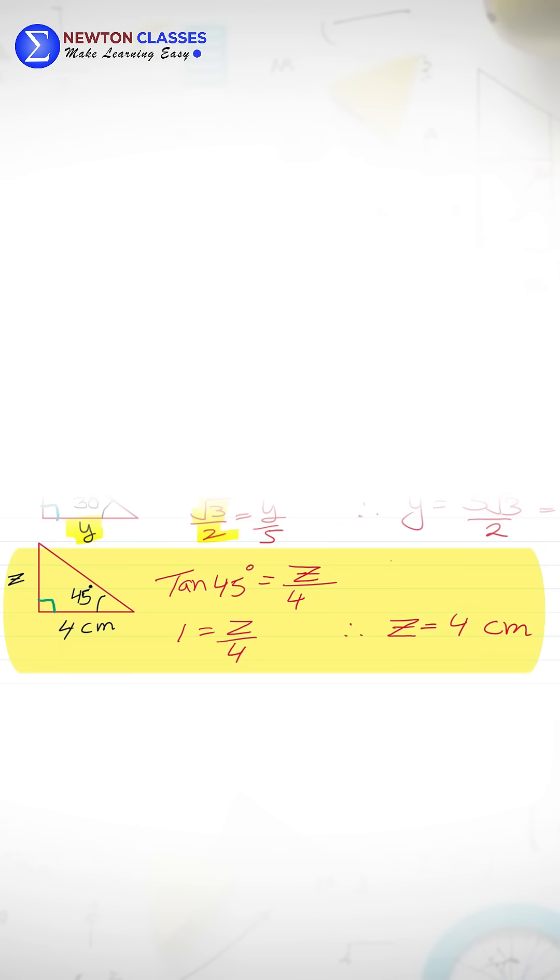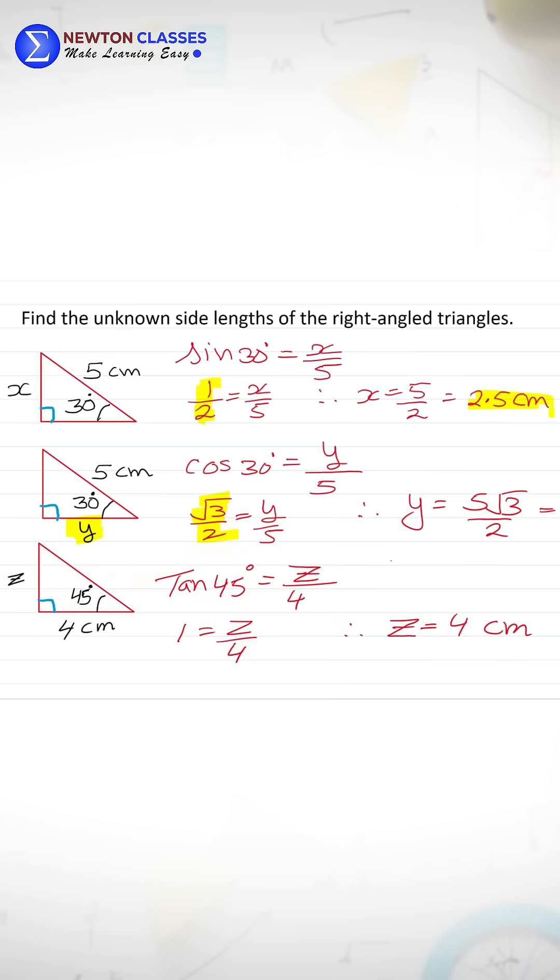Similarly, tan theta is tan 45 here, tan 45 Z on 4, rise over run, tan 45 is 1. Therefore, value of Z is 4 cm.